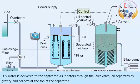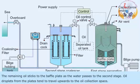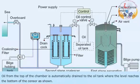Oily water is delivered to the separator. As it enters through the inlet valve, oil separates by gravity and collects at the top of the separator. The remaining oil sticks to the baffle plates as the water passes to the second stage. Oil droplets from the plates tend to travel upwards to the oil collection space. Oil from the top of the chamber is automatically drained to the oil tank when the level reaches the bottom of the sensor.